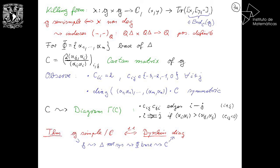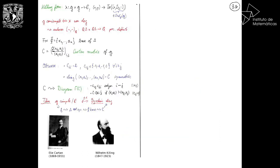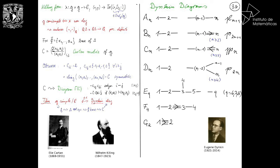Here is the famous Cartan-Killing classification of simple Lie algebras over the complex numbers. A Lie algebra is simple if and only if its Cartan matrix, encoded as a diagram, is one of the following. There are four series A, B, C, and D, and five exceptional ones. These diagrams were found by Eugene Dynkin, remarkably when he was about 22 years old as a student at the Gelfand Seminar. It was essentially Cartan's PhD thesis to correct and complete the classification originally due to Killing.